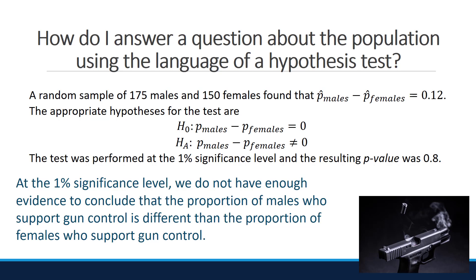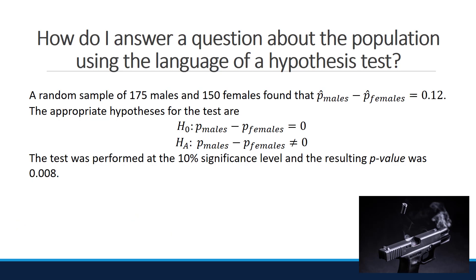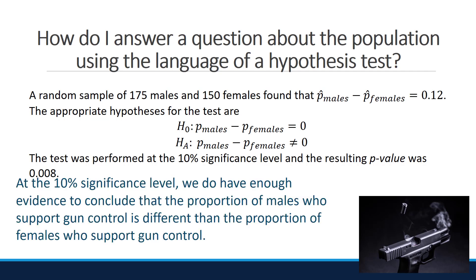For Part A, you should have found that at the 1% significance level, we do not have enough evidence to conclude the proportion of males who support gun control is different than the proportion of females who support gun control. The reason is that the resulting p-value of 0.8 was higher than alpha of 0.01. For the second one, you should have found that at the 10% significance level, we do have enough evidence to conclude the proportion of males who support gun control is different than the proportion of females — because the p-value of 0.008 is smaller than alpha of 0.1.